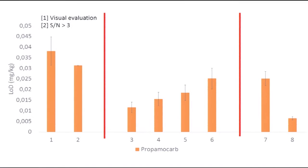The first group uses visual evaluation and signal to noise ratio. In visual evaluation the analyst looks at the chromatogram and decides whether the peak of the analyte is present or not. From that, the decision is made whether the analyte is detected or not.